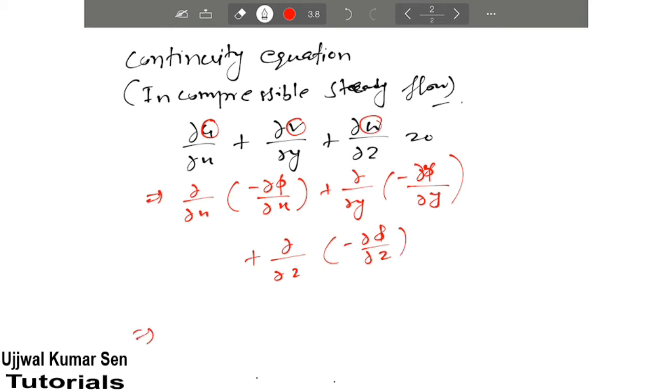Now we can take the minus sign outside. So curly square phi upon curly x square plus curly square phi upon curly y square plus curly square phi upon curly z square equals zero. This becomes positive when we send the minus to the other side.